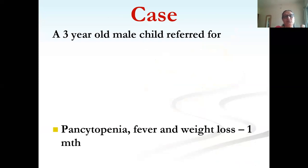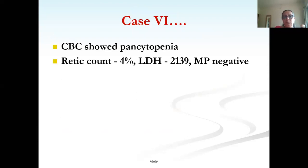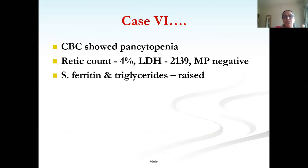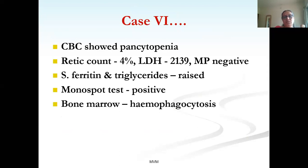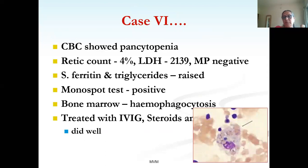Post-haploidentical transplant: conditioning with multiple drugs, GvHD prophylaxis with post-transplant cyclophosphamide. Immediately post-transplant: Hb 8.8 g%, WBC 4630, platelets 262,000. One year post-transplant: Hb 9.3 g%, WBC 7910, platelets 516,000 — doing very well. Another case: a three-year-old male with fever, weight loss, severe pallor, pedal edema, SAM, hepatosplenomegaly, pancytopenia with retic 4%, high LDH and triglycerides, elevated ferritin, and positive monospot test for EBV — diagnosed as secondary HLH.